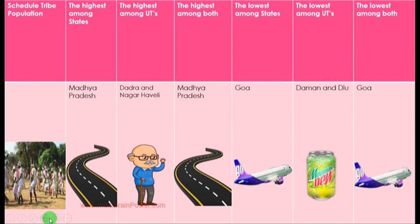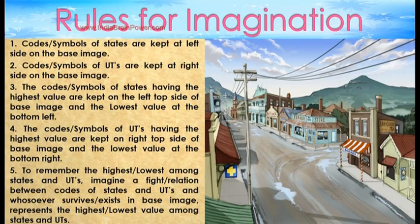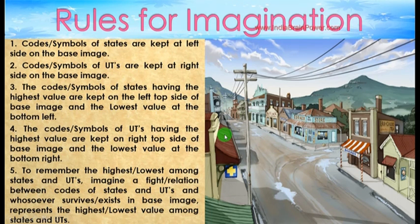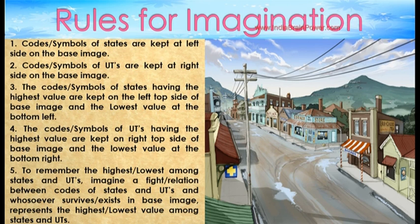The next aspect to memorize is the scheduled tribe population. The code symbols of states are kept at the left side on the base image, and the code symbols of utilities (UTs) are kept at the right side on the base image. The code symbols of states having the highest values are kept on the top left side of the base image and the lowest value at the bottom left.